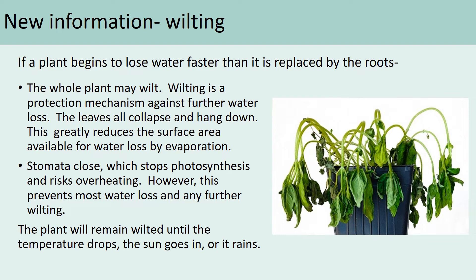Can you put down a few adaptations that plants have to reduce water loss? We've looked at the waxy cuticle, which reduces the amount of water lost from the leaves. We looked at the folding of the leaves, which increases humidity and reduces light intensity. And also wilting of plants. Pause the video and write down some of those adaptations.